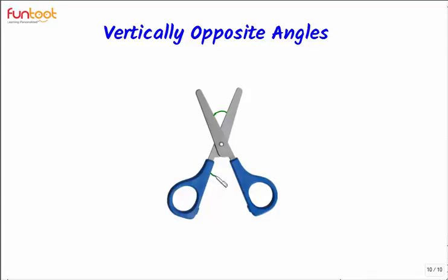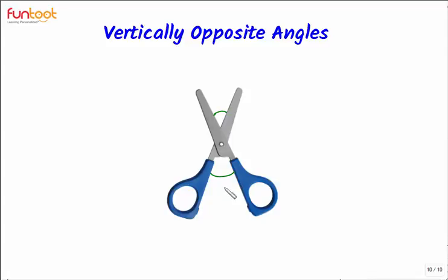Or we increase this angle. Vice versa, if we want to close the cutting arms or decrease this angle, then we close the handles or decrease the angle between the handles. So what is happening here is that the angle between the cutting arms always remains equal to the angle between the handles.